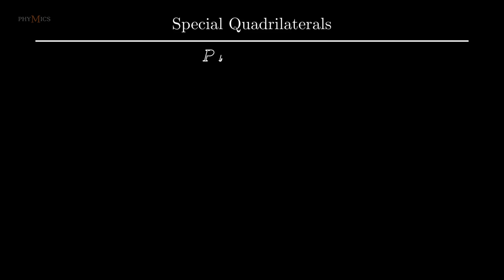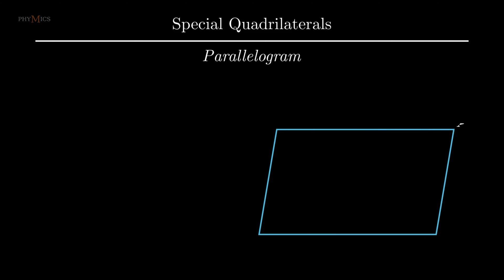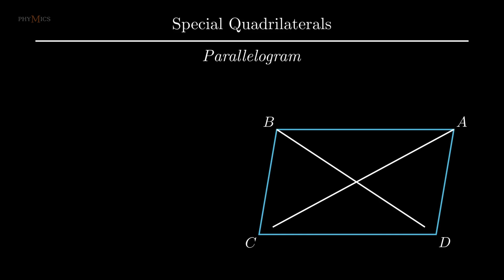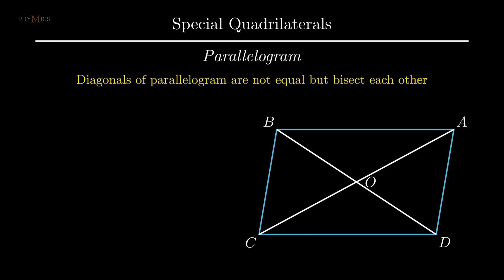Let's understand the third case of special quadrilateral known as parallelogram. A parallelogram is a quadrilateral with pairs of opposite sides that are equal and parallel: side AB is equal and parallel to side CD, and side BC is equal and parallel to side AD. Opposite vertex angles of a parallelogram are equal, that is angle A equals angle C and angle B equals angle D. Diagonals of a parallelogram are not equal but bisect each other.